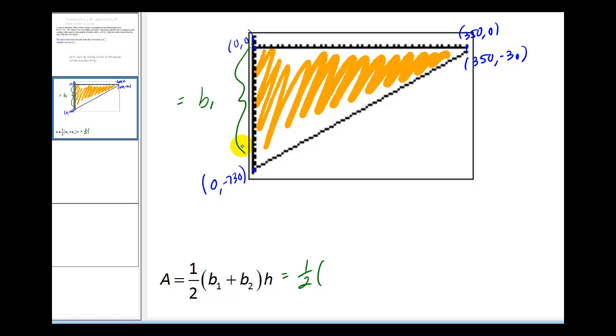Well, base one would be f(0) or negative 730, and we do have to take the sign with it, even though we do think of a length as being positive in most cases.